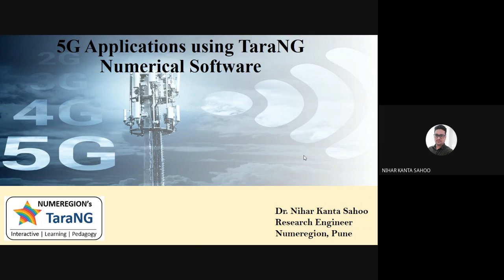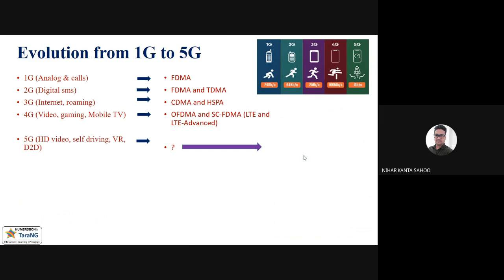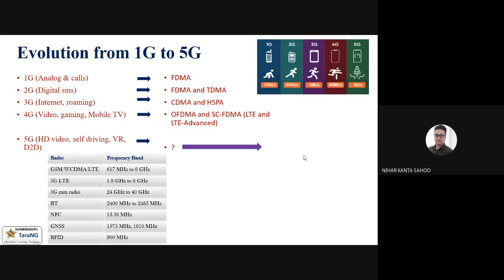Today my presentation will be based on the 5G applications using Taurang numerical software. So these are the evolutions from 1G to 5G. I hope you all know already. In 1G we are getting only calls, through 3G, 4G. So now we are at the 5G. Currently 4G is going on via video, gaming, mobile, based on the OFDMA and SC-FDMA, which is based on LTE and LTE advanced technique. Currently these are the frequency bands. For the GSM, we started using from 600 megahertz to 6 gigahertz for LTE 1.8 to 6 gigahertz. Then 5G millimeter wave 24 to 40. For peer field communication, GNSS, RFID application. In India, especially the trial spectrum for the 5G is declared for 700 megahertz and 3.3 to 3.6 and 24 to 28 gigahertz in this range.